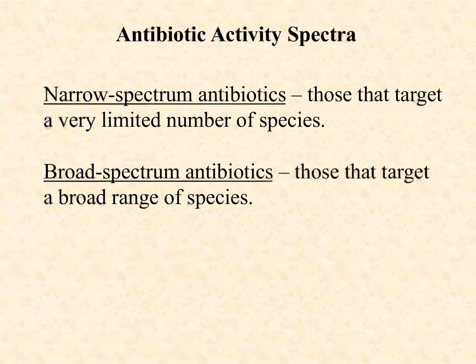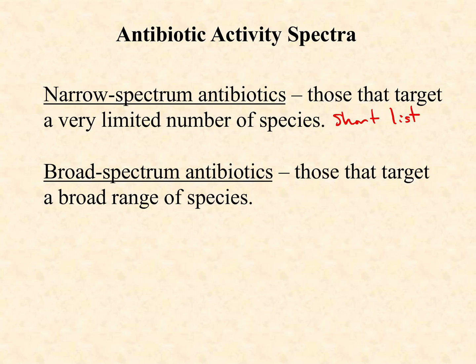So what do we mean when we say antibiotic activity spectrum? Narrow spectrum antibiotics target a very limited number of species — think of it as a short list of bacteria that a particular drug would be effective against. Whereas broad spectrum antibiotics are going to have a long list; they have a broad range of species that they're going to be effective against.